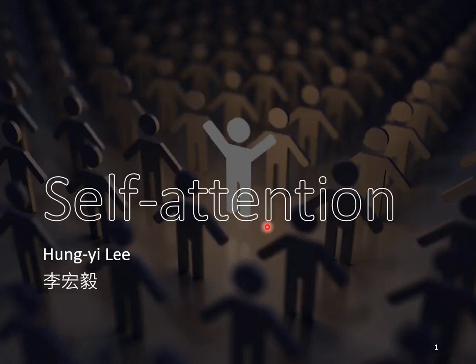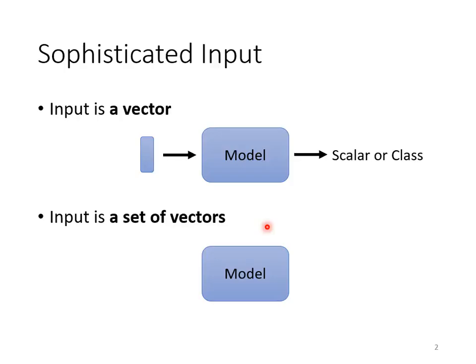What are we going to talk about next? After finishing CNN, we are going to talk about another common network architecture. This architecture is called self-attention. And what is the problem that self-attention wants to solve? So far, the input of our network is a vector.